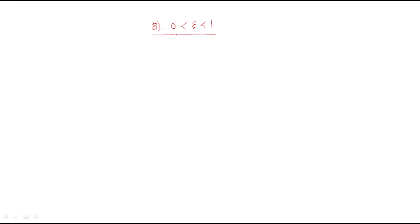In this session we will discuss the output of the second order system whenever the zeta value is between 0 and 1. We will directly consider the characteristic equation, which is s² + 2ζωₙs + ωₙ² = 0. Here zeta must be included in the characteristic equation.